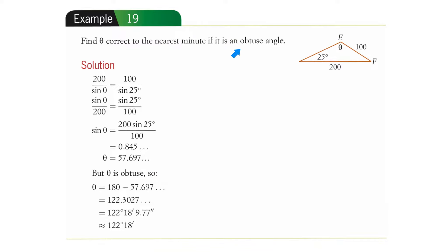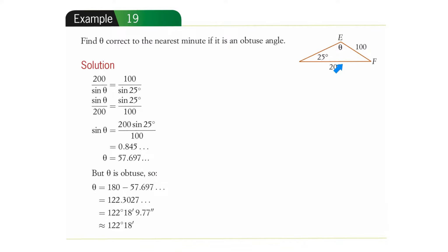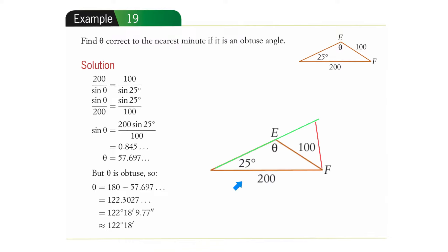This is a bit confusing because it tells us the obtuse angle. So what is the other answer? Let's look at what this triangle could also look like. We need to see at which point it could pivot. We're given that the side must be 200, the angle must be 25 degrees, and that side must be 100. But can we construct another triangle that meets those criteria?